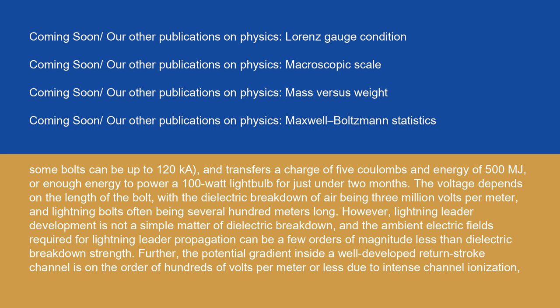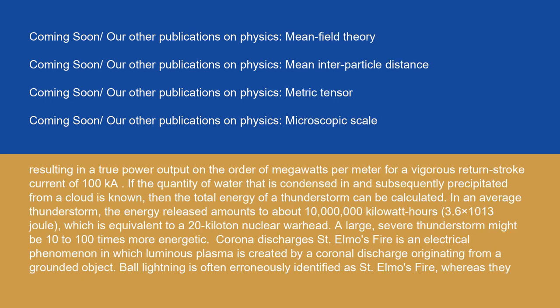The voltage depends on the length of the bolt, with the dielectric breakdown of air being 3 million volts per meter, and lightning bolts often being several hundred meters long. However, lightning leader development is not a simple matter of dielectric breakdown, and the ambient electric fields required for lightning leader propagation can be a few orders of magnitude less than dielectric breakdown strength. Further, the potential gradient inside a well-developed return stroke channel is on the order of hundreds of volts per meter or less due to intense channel ionization, resulting in a true power output on the order of megawatts per meter for a vigorous return stroke current of 100 kA.